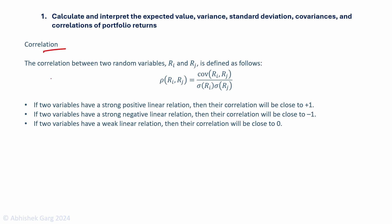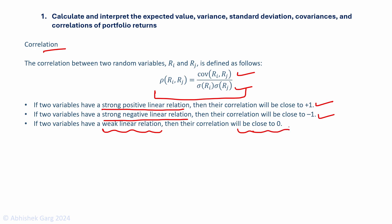Now let's discuss correlation. Correlation is simply covariance divided by the standard deviations of the individual components. For a two-asset portfolio of Ri and Rj, the correlation of Ri and Rj equals the covariance of Ri and Rj divided by the standard deviation of Ri times the standard deviation of Rj. If two variables have a strong positive linear relation, their correlation will be closer to plus one. A strong negative linear relation gives correlation close to minus one, and a weak linear relation gives correlation close to zero.